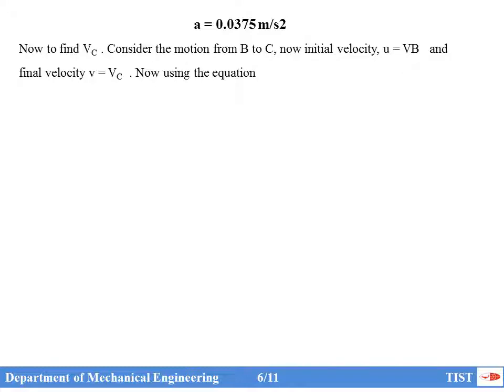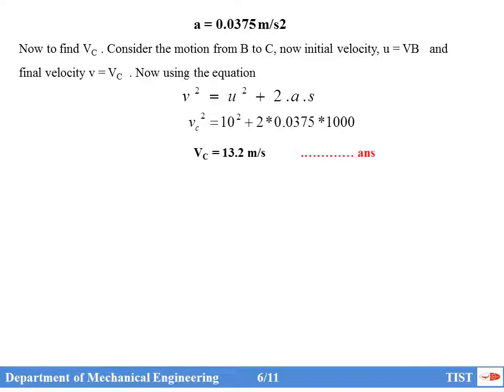To find VC, consider the motion from B to C. The initial velocity is VB = 10 m/s and final velocity is VC. Since we assumed uniform acceleration for the train, the same value A = 0.0375 m/s² applies. So VC² = 10² + 2 × 0.0375 × 1000. From this we get VC = 13.2 m/s. Try to get this answer using your calculator.